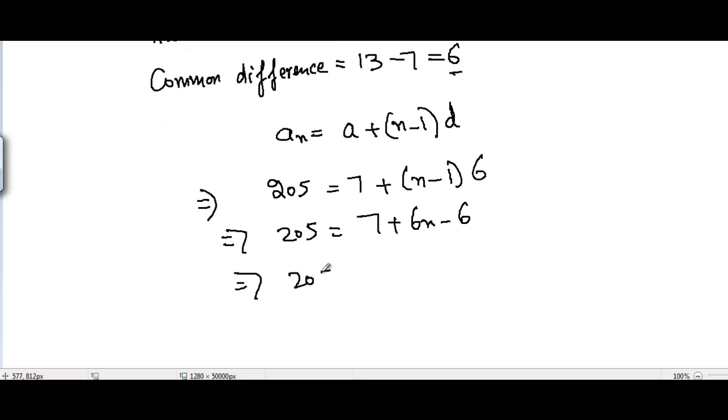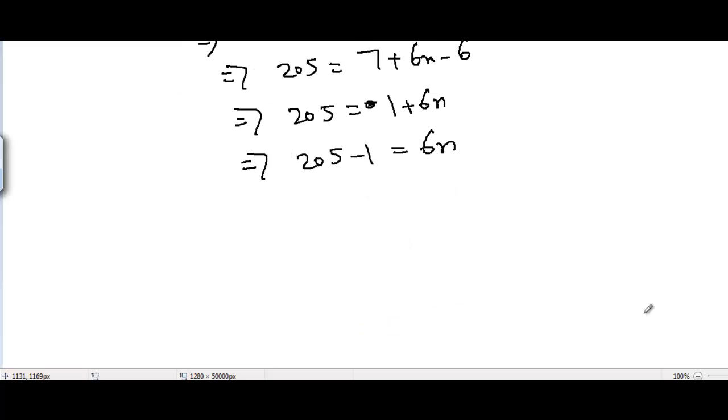And I get 205 = 7. 7 minus 6 is 1 actually, and 1 + 6n here. So I can take 1 to the other side, to the left hand side, which equals 6n, and I get 204 = 6n. So I get n = 204/6 and it's equal to 34.